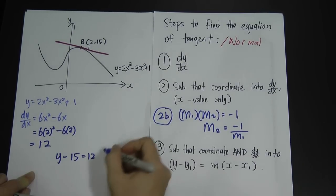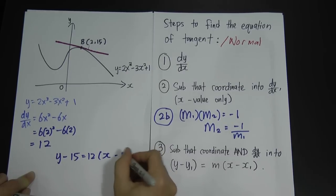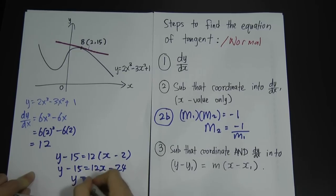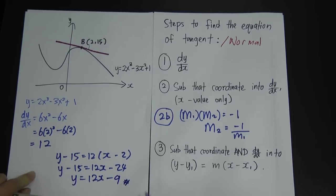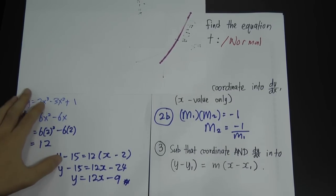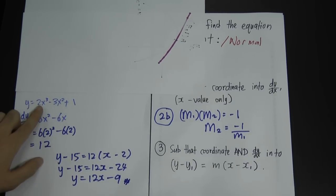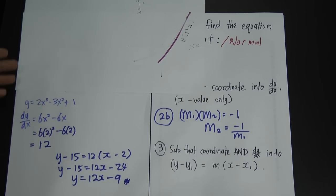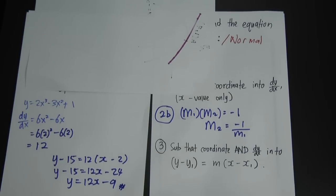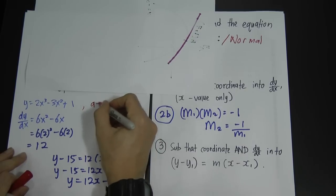I got gradient equals 12 and coordinate B is 2 and 15. Substituting into the formula: y minus 15 equals 12 times x minus 2. So y minus 15 equals 12x minus 24, therefore y equals 12x minus 24 plus 15, which is y equals 12x minus 9. This is the equation of tangent. Even if you don't have a diagram and they just give you the equation with the coordinate, you do the same thing.